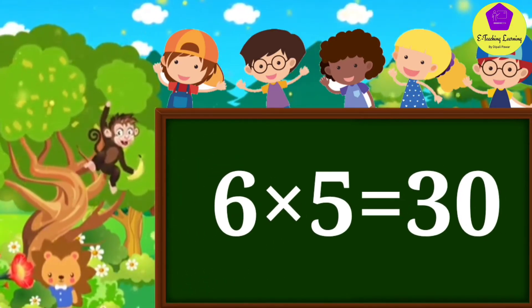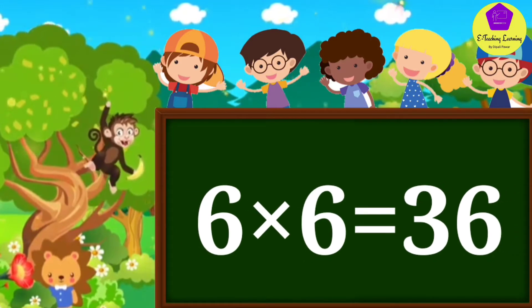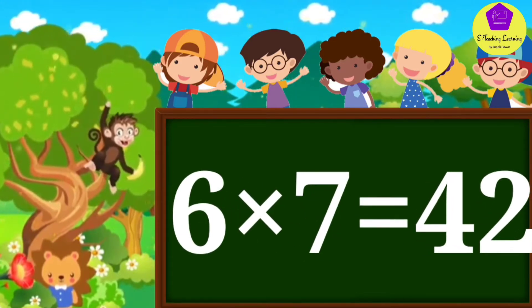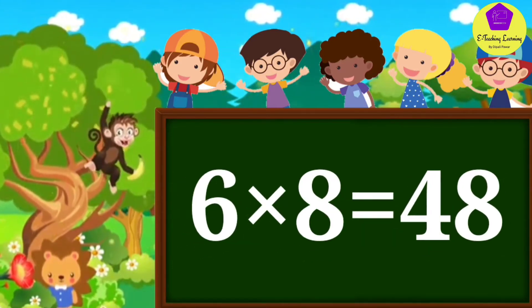Six fives are thirty, six sixes are thirty-six, six sevens are forty-two, six eights are forty-eight.